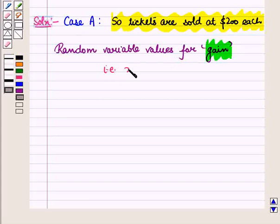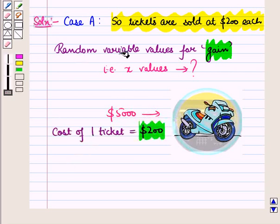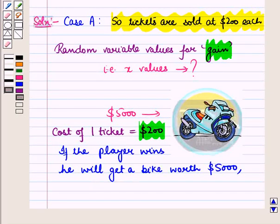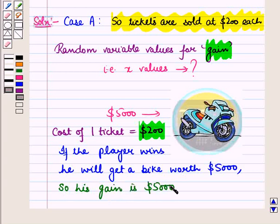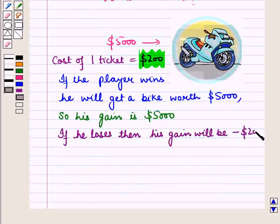We need to find the X values. The organization raffles a bike worth $5,000, and the cost of one ticket is $200. If the player wins, he will get a bike worth $5,000, meaning his gain is $5,000. If he loses, then his gain will be minus $200, that is a loss of $200, which is the value of the ticket.